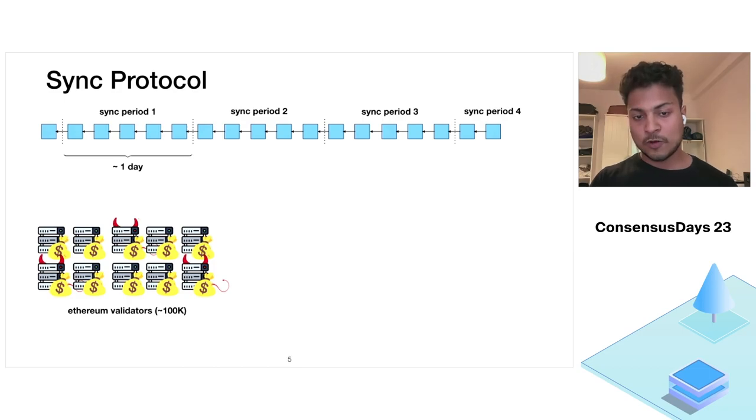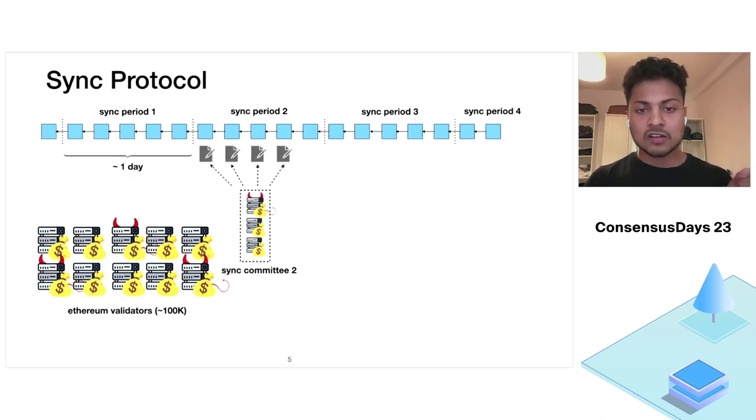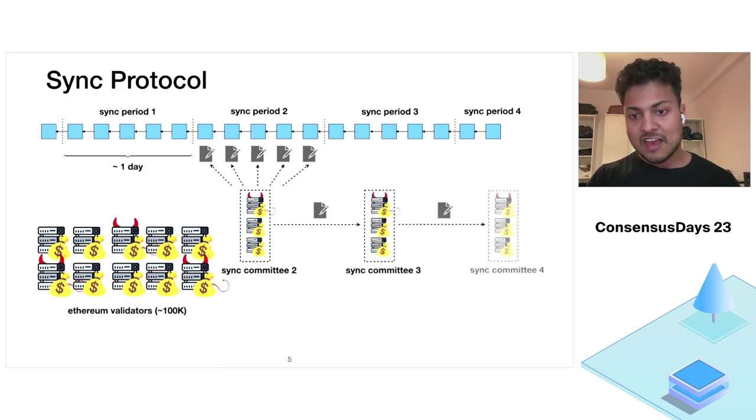The sync committee has two responsibilities. First, the sync committee should sign every block in its period. And second, the sync committee should sign the next sync committee and so on. And the next sync committee again signs every block in its period and the next sync committee. Also, whenever we will use the signatures of the sync committee, we will always take a quorum over these signatures.